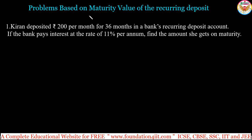We will see some problems based on maturity value of the recurring deposit — maturity value as well as finding interest. In this problem, Kiran deposited 200 per month for 36 months in a bank's recurring deposit account. If the bank pays interest at the rate of 11% per annum, find the amount she gets on maturity.